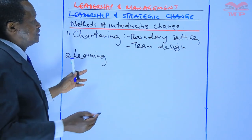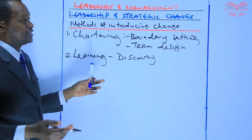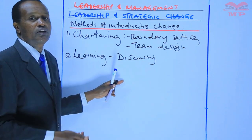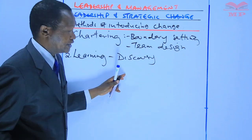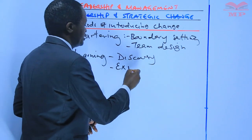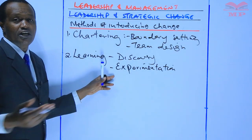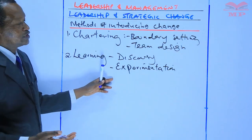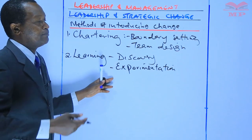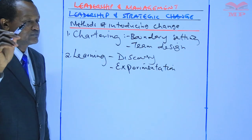Under learning, there has to be discovery — the data and information gathering to define goals of the change program and the means of achieving the objectives. There is also the element of experimentation, which includes testing and refinement of the means of achieving the objectives that are set up.